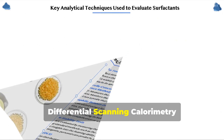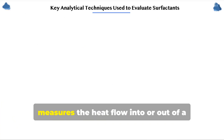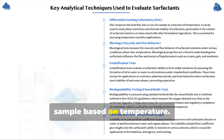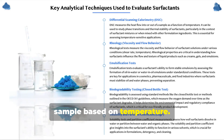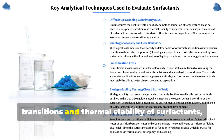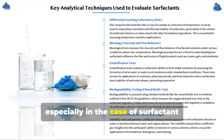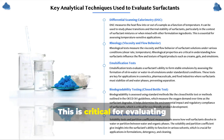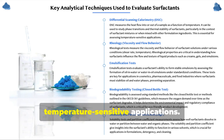Differential scanning calorimetry (DSC) measures the heat flow into or out of a sample based on temperature. DSC can be used to study phase transitions and thermal stability of surfactants, especially in the case of surfactant mixtures or blends with other formulation components, which is critical for evaluating temperature-sensitive applications.